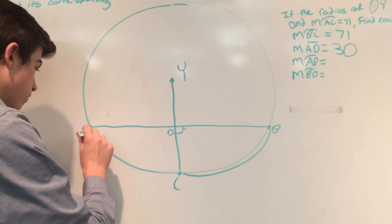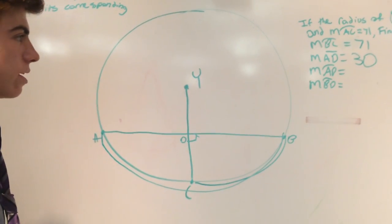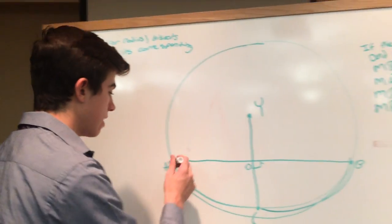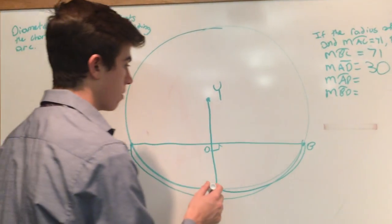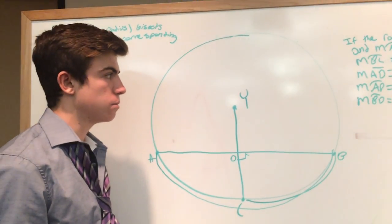Now for the measure of arc AB. That's that one right there. We know that arc AC equals 71 and arc BC equals 71. So you just add those and it equals 142.